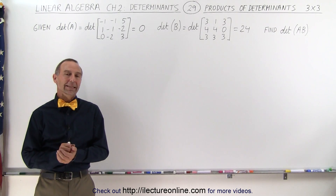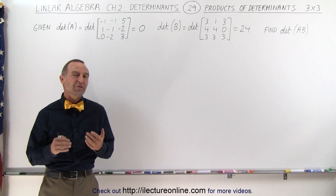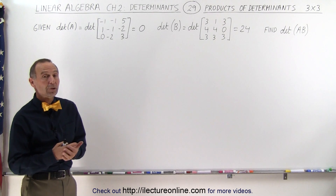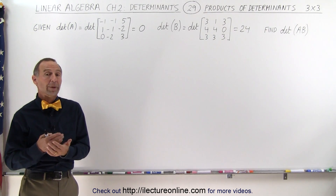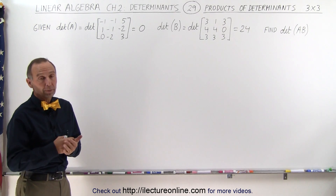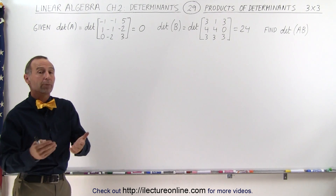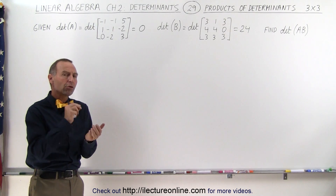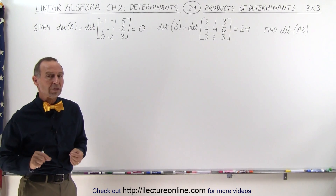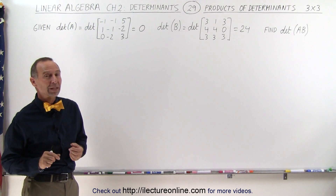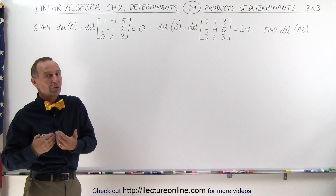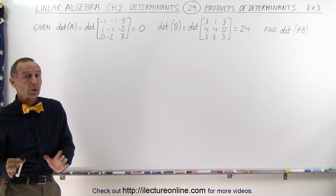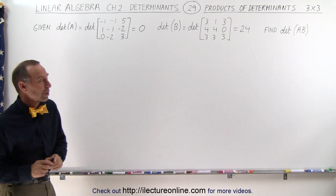Welcome to iLectureOnline. In previous videos we've shown you that the determinant of a 2x2 matrix multiplied times the determinant of another 2x2 matrix is equal to the determinant of the product of those two matrices. That was with 2x2 matrices. Here we're going to show you that the same thing works for 3x3 matrices.